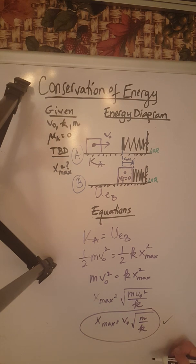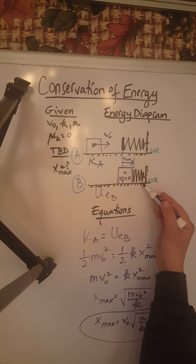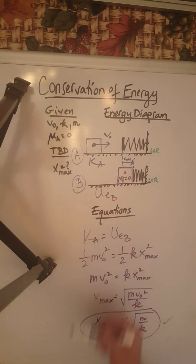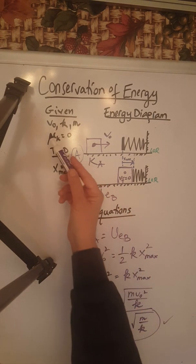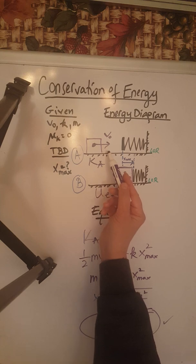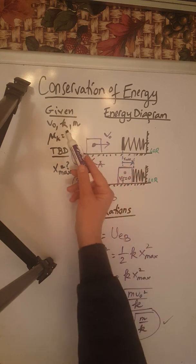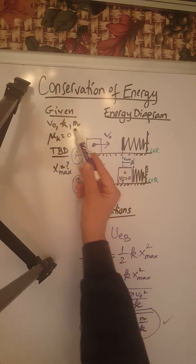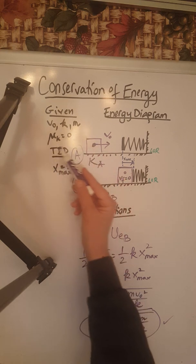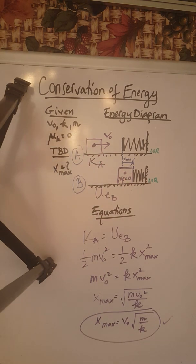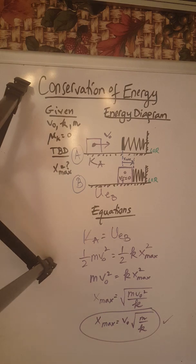And that is the maximum compression of the spring. In this problem, what we were to determine was x max, and what was given was the speed of the object as it moves toward the spring, the spring constant, the mass of the object, and the fact that we have a smooth surface—so therefore no friction. Thank you!